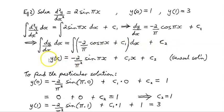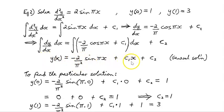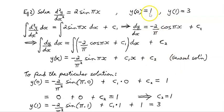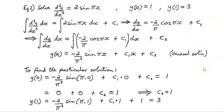The general solution gives us y(x) = −(2/π²) sin(πx) + c1·x + c2. Now applying our boundary conditions y(0) = 1 and y(1) = 3, let's substitute those in.